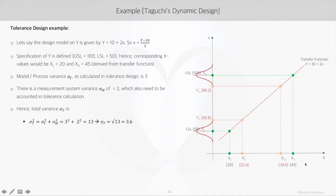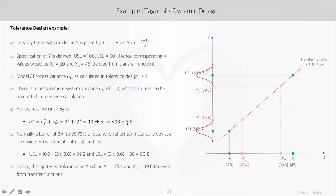Since we are calculating a tighter tolerance, we must account for measurement system variance — in this case, it's 2. The total variance is the sum of individual component variances: 3 squared plus 2 squared equals 13. The standard deviation is the square root of 13, which is 3.6. Normally in statistical tolerance, a buffer of 3 sigma — equivalent to 99.73% of data within the upper and lower limits — is taken at both USL and LSL.